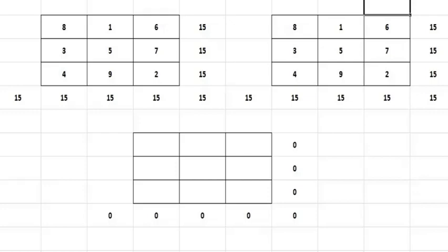Friends, today we will see how to multiply two magic squares. Magic squares per se cannot be multiplied as-is, but if you treat magic squares as matrices and apply the matrix multiplication formula, then we can multiply two magic squares. For this to happen, we should have two magic squares of the same order — a 3×3 with a 3×3, a 4×4 with a 4×4, or a 5×5 with another 5×5.